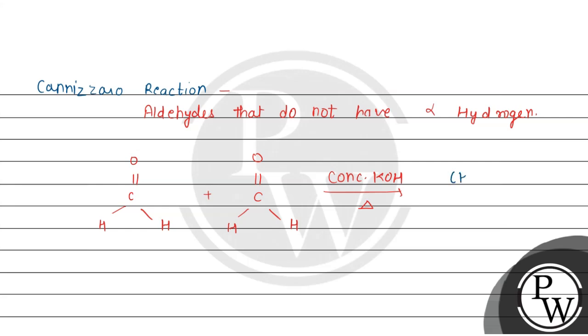When we heat it, we will get products. One product will be methyl alcohol, and the other product will be HCOOK.